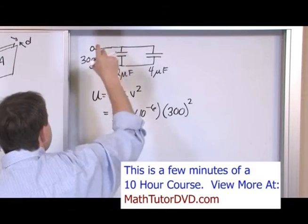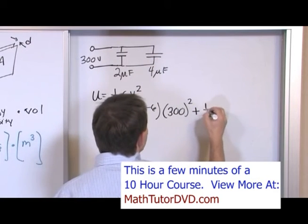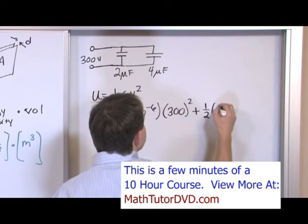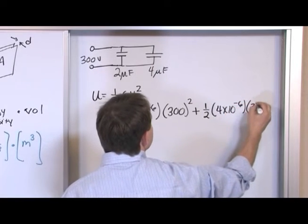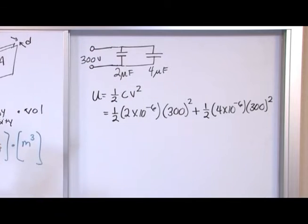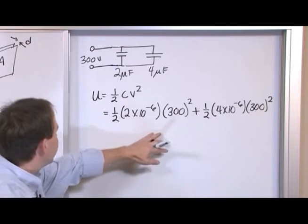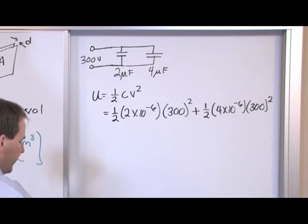So that's the energy in this one plus the energy stored in this one. 1/2 × 4 × 10^-6 × 300². It's also 300 volts because it's connected directly to the battery. That's really the only trick. If you didn't understand circuits at all you wouldn't know what voltage to put there.